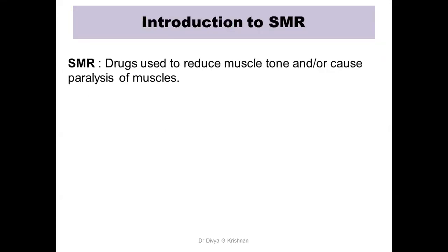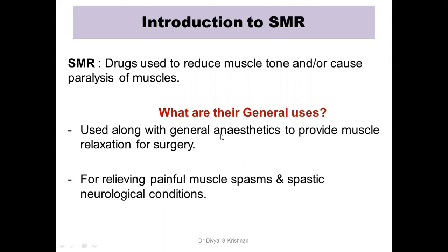So what are these drugs? Skeletal muscle relaxants are drugs which are used to reduce the muscle tone or to cause the paralysis of muscles. The general uses are along with general anesthetics to provide muscle relaxation during surgery, since the patient has to be immobile. These are also used for cutting painful muscle spasms.